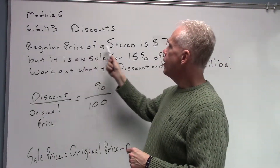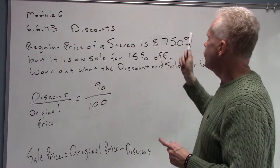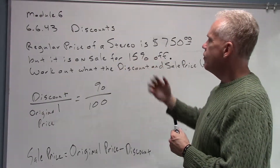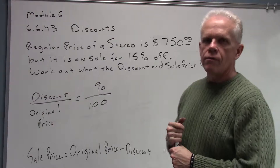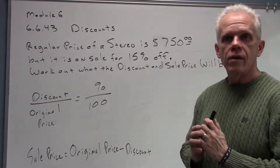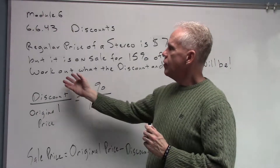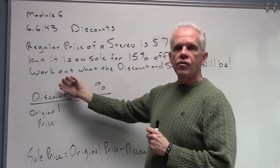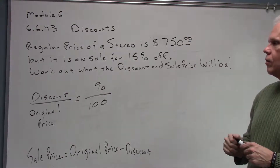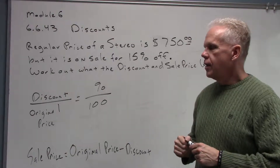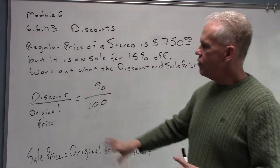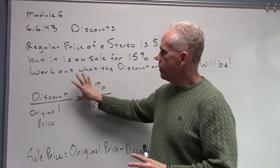The situation is: the regular price of a stereo is $750, but the stereo is on sale for 15% off. We want to hit that sale and save some money. The question asks us to work out what the discount and sale price will be. To find the discount, we'll use this proportion model.